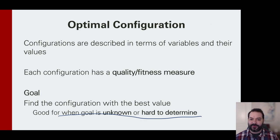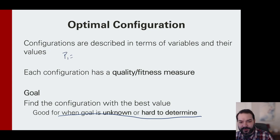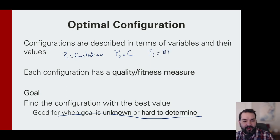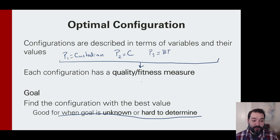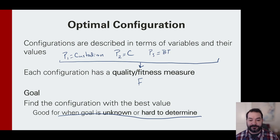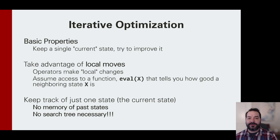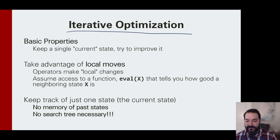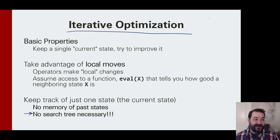So that's where we work off the idea that each configuration — however we set it up, say P1 equals custodian, P2 is the chef, P3 is the bartender, et cetera — generates some fitness measure. You may remember this as the F score in our A* solution. What we want to do is something known as iterative optimization, which allows us to not have to deal with a search tree.